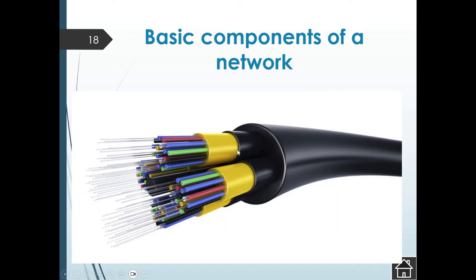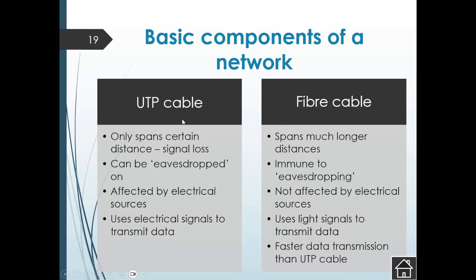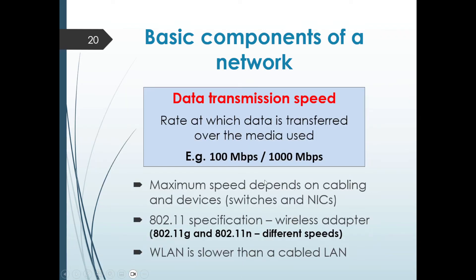Fiber optic cable has glass fibers — light moves through those glass fibers, and that is how data travels, which is why it can move so fast. Comparing fiber to UTP: UTP only spans certain distances and you get signal loss, whereas fiber can go much longer distances. UTP is affected by electrical sources whereas fiber is not. UTP uses electrical signals to transmit data; fiber uses light signals.